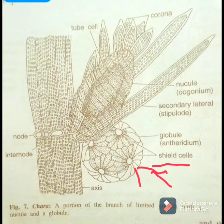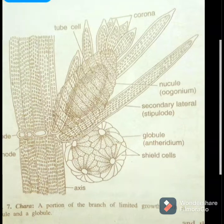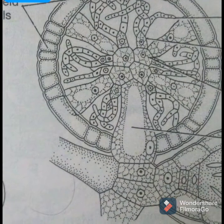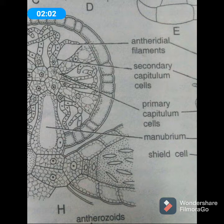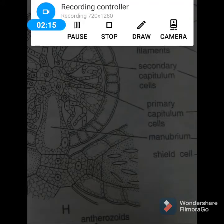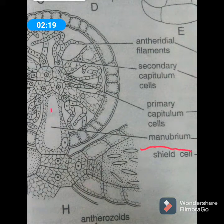Looking at another diagram showing the internal structure of the globule, there is a rod-shaped cylindrical cell which arises from the center. This rod-shaped cylindrical cell is referred to as the manubrium, and it is present in the center of the globule.